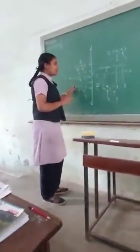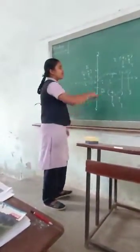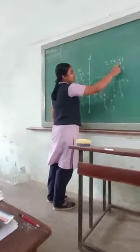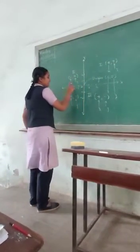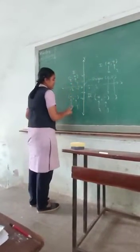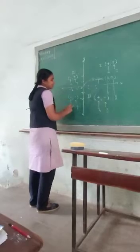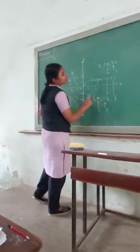The plane is divided into 4 parts. The first part is positive positive. The second quadrant is negative positive. The third quadrant is negative negative. The fourth quadrant is positive negative.